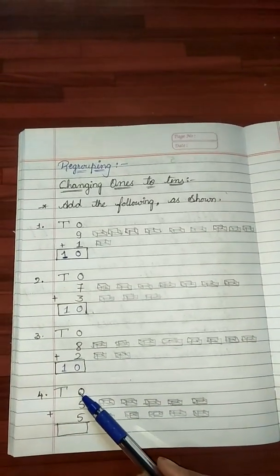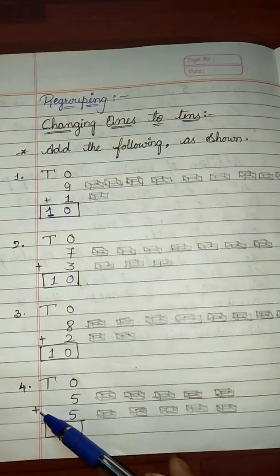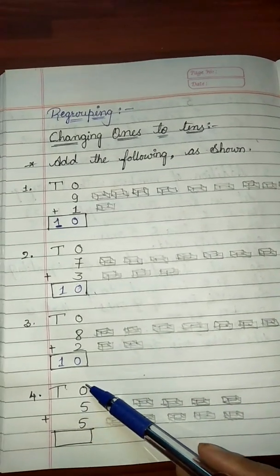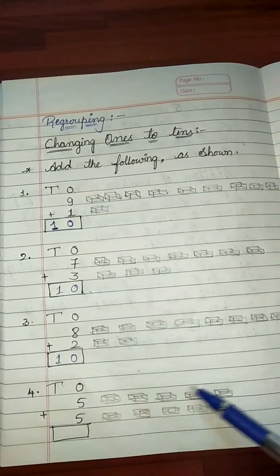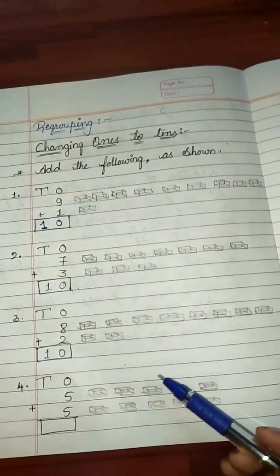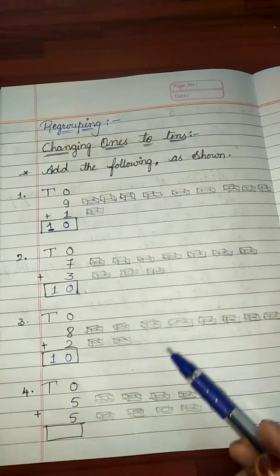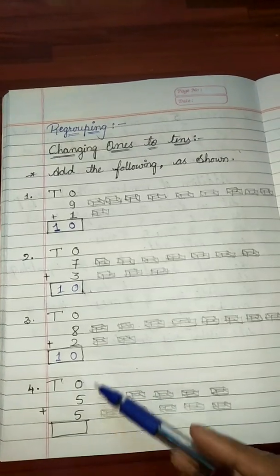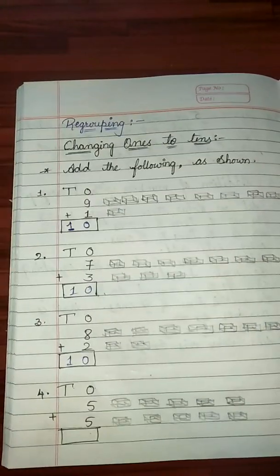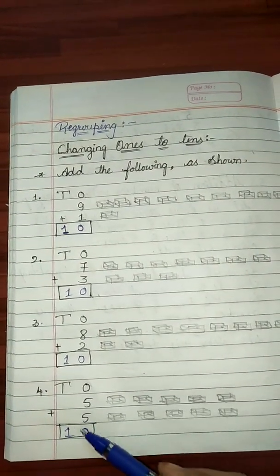Now, next. O means ones and T means tens. See here, 5 plus 5. Here, we are adding 5 ones and 5 ones. By counting the blocks, we know that the answer is again 10. The biggest number that can be written in the ones place is 9. Thus, we cannot write 10 in the ones column. So, we write 10 ones as 1 ten and 0 ones — answer is 10.